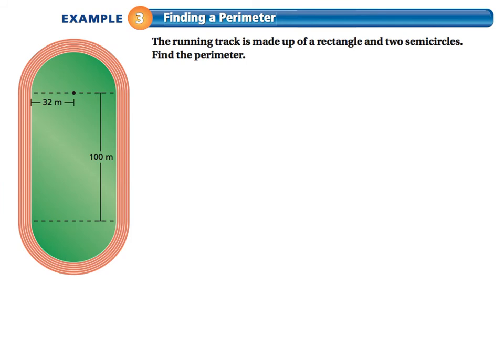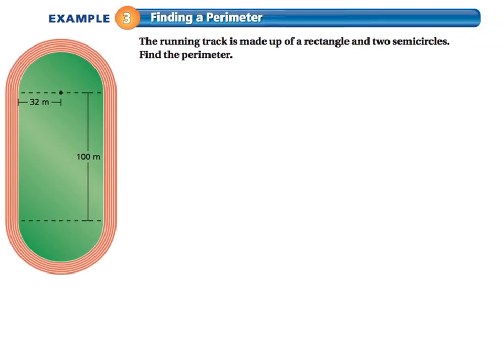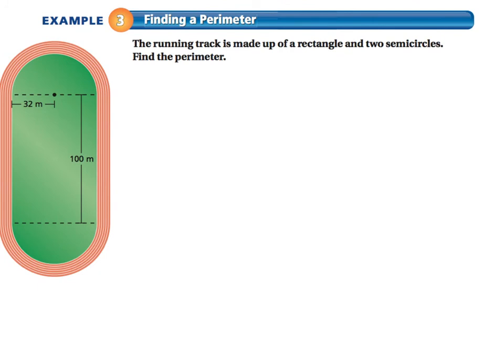In example 3, we're going to find the perimeter of a running track. Now, I normally would not even give you this. And I will tell you I will not give you this on any tests or quizzes. I will not tell you that it's made up of anything. I'll just say we have a running track. And you have to come up with this all on your own. So here's the running track.